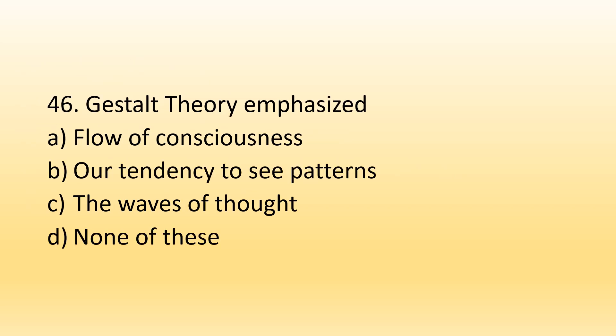Number 46. Gestalt theory emphasized: Option A, Flow of consciousness; Option B, Our tendency to see patterns; Option C, The way of thoughts; Option D, None of these. The right option is Option B, Our tendency to see patterns. According to Gestalt theory, humans always perceive any complex thing as a whole — they see it as a complete, simplified form.